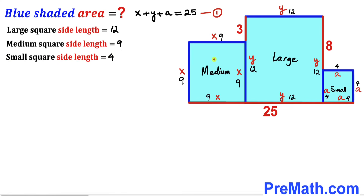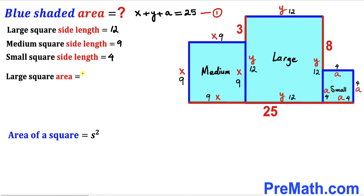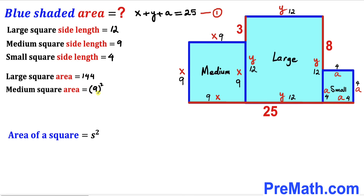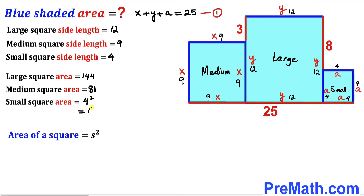Now we are going to calculate the area of all these individual squares. Recall the area of a square formula: area equals s squared, where s is the side length. For the large square with side 12: area equals 12 squared equals 144. For the medium square with side 9: area equals 9 squared equals 81. For the small square with side 4: area equals 4 squared equals 16 square units.